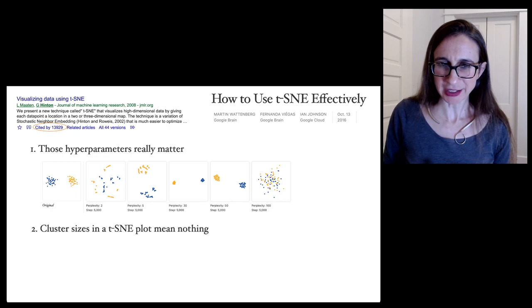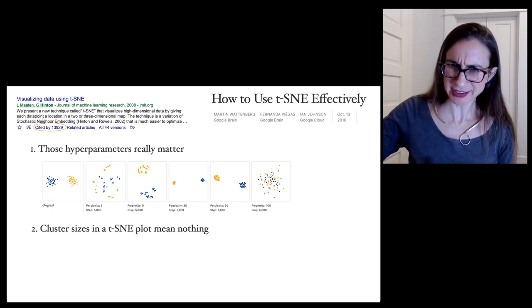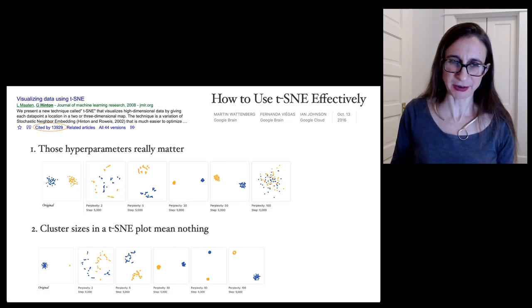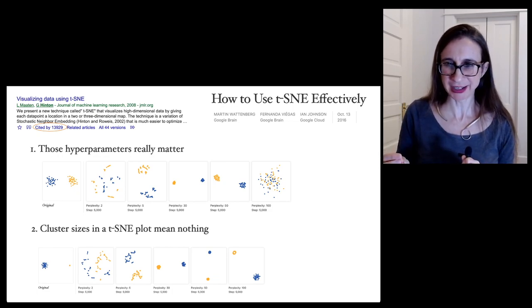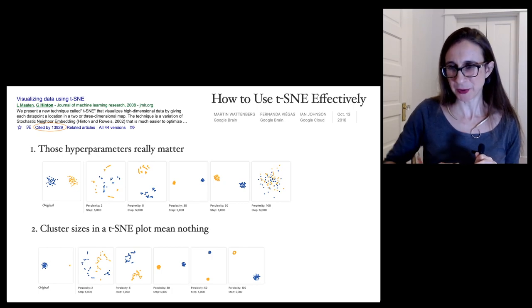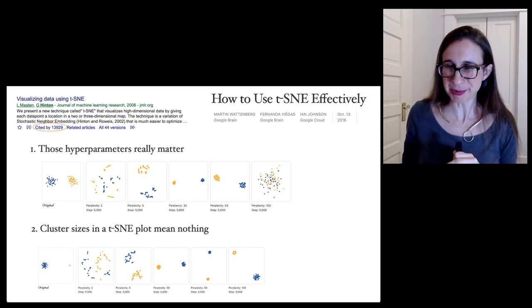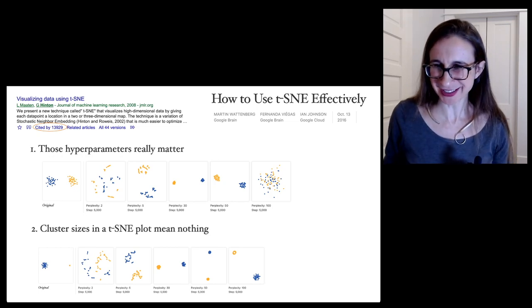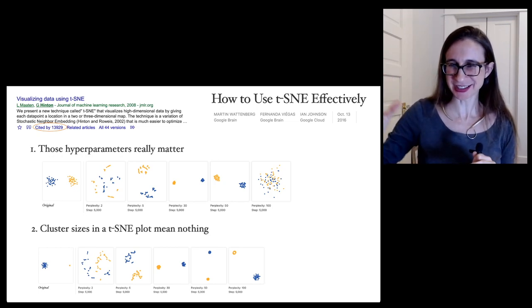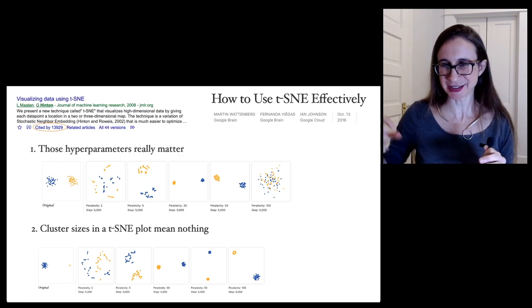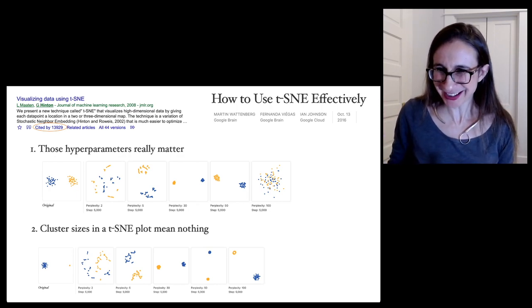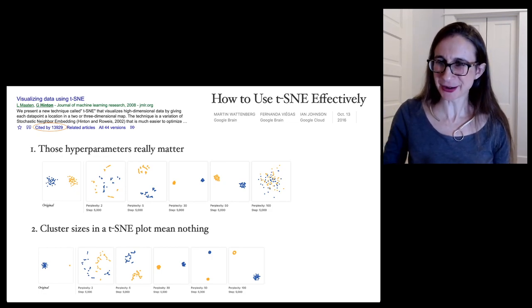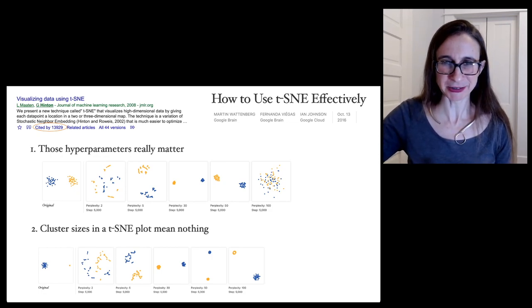Another thing that he pointed out was that the cluster sizes in a t-SNE plot don't mean anything. When he started with his original data, there were two clusters, a big one and a little one. And when you use different hyperparameters in t-SNE, you get all kinds of weird different results. Sometimes the clusters are equal sizes and sometimes one of them looks like a donut. It's just not what I expected from an algorithm that's so well known and well used.